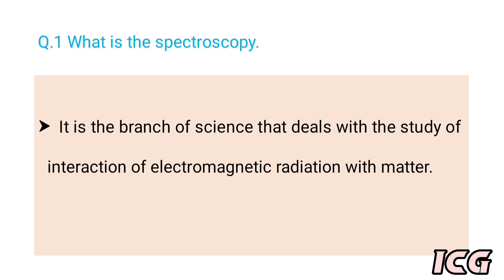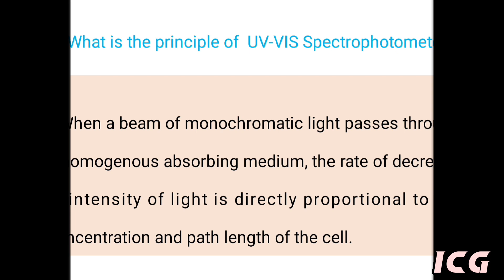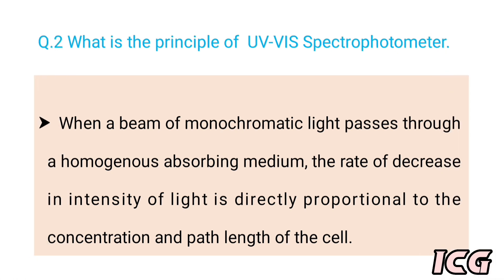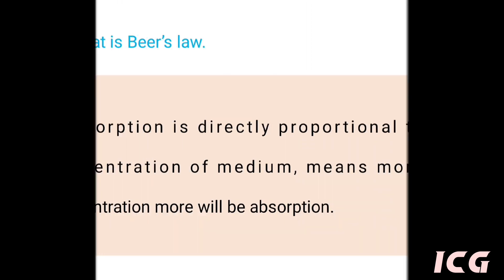The next question is: what is the principle of UV-Visible spectrophotometer? The answer is when a beam of monochromatic light passes through a homogeneous absorbing medium, the rate of decrease in intensity of light is directly proportional to the concentration and path length of the cell.